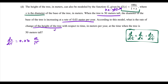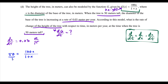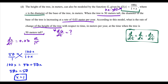We need to find when the tree is 50 meters tall. Setting g of x equal to 50 gives 50 equals 100x over (1 plus x). Cross-multiplying: 100x equals 50 times (1 plus x), so 100x equals 50 plus 50x. Subtracting 50x from both sides gives 50x equals 50, so x equals 1. This isn't our final answer, but it's a necessary piece of the puzzle.